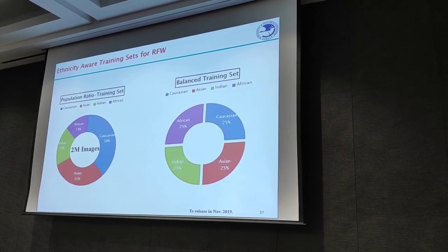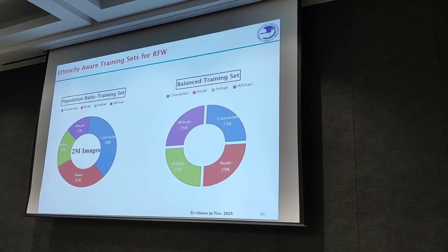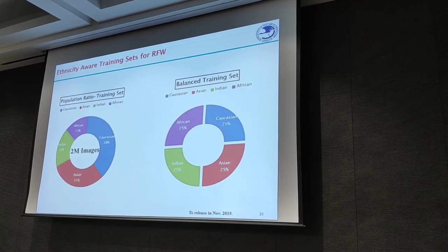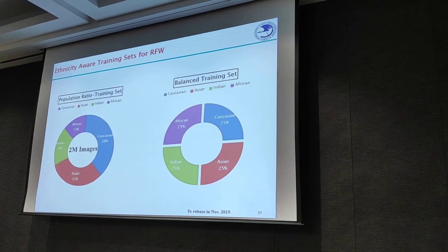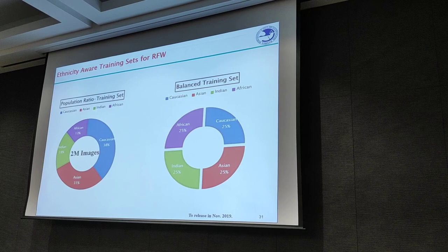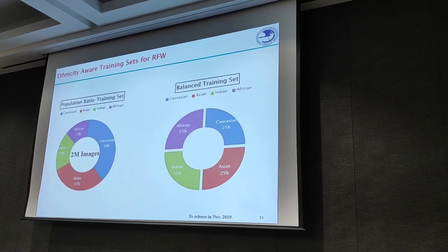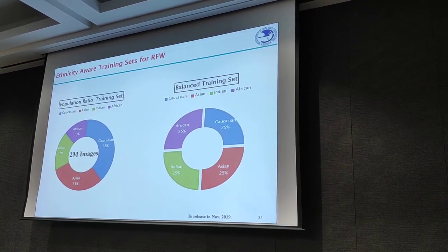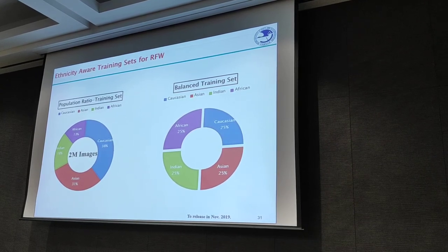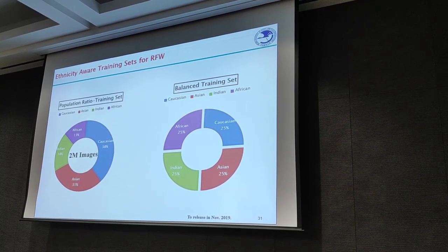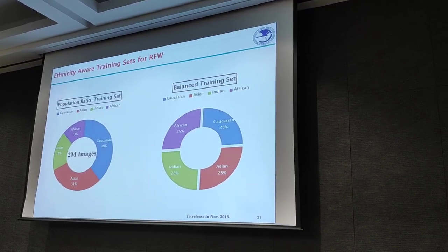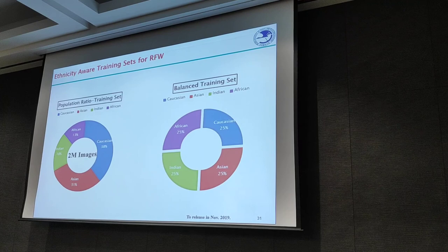Thus, social awareness must be brought to building datasets for training. We should take steps to ensure datasets are diverse and do not under-represent particular groups. Specifically, we collected a new image dataset according to the population ratio of ethnicities in the world and constructed a training set strictly balanced by ethnicity. We encourage researchers to retrain and evaluate existing methods using this dataset to reduce racial bias.